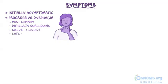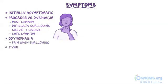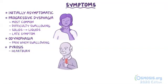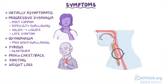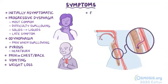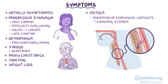Unfortunately, dysphagia is a late symptom. Other symptoms include odynophagia or pain when swallowing, pyrosis which is the fancy word for heartburn, pain in the chest or back, vomiting, and weight loss. When the cancer invades and perforates the entire esophageal wall, it can invade the trachea in front of it, forming a fistula. This can cause pulmonary aspiration of esophageal contents, causing symptoms like coughing and dyspnea. If the cancer spreads to the diaphragm, it can cause hiccups.